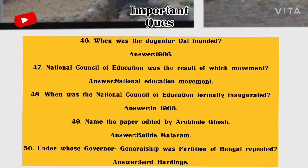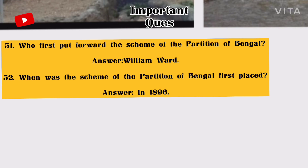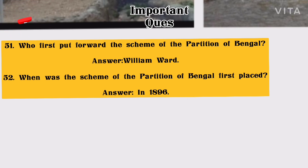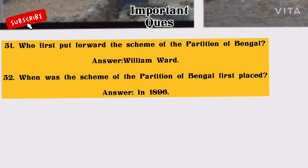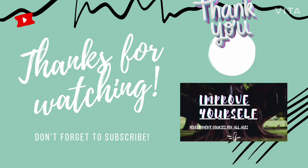Number 50: Under whose governor-generalship was the Partition of Bengal repealed? Answer: Lord Hardinge. Number 51: Who first put forward the scheme of partition of Bengal? Answer: William Orde. Number 52: The scheme of partition of Bengal was first placed in which year? Answer: 1896. Thank you all for watching my video till the end, and don't forget to subscribe. Bye bye.